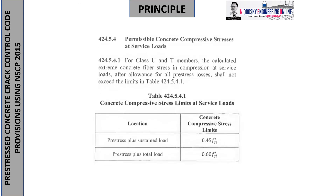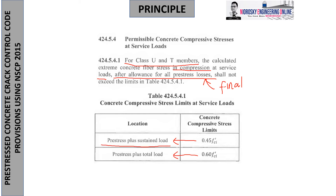Now for the final state — after allowance for all prestress losses — under Class U and Class C members, the calculated extreme concrete fiber stress in compression at service load is checked. The two limiting values are 0.45fc' for prestress plus sustained loads, and 0.6fc' for prestress plus total load, respectively.